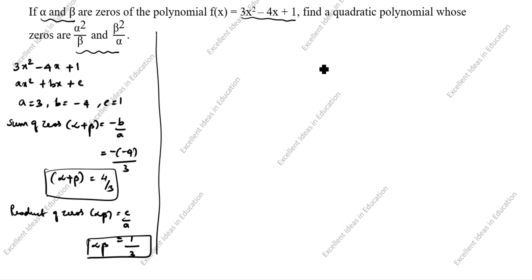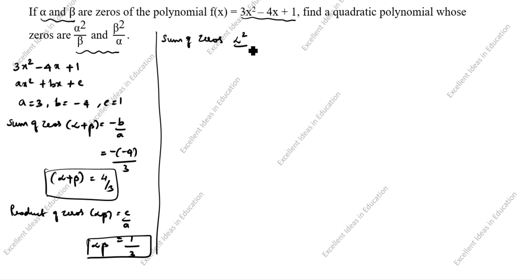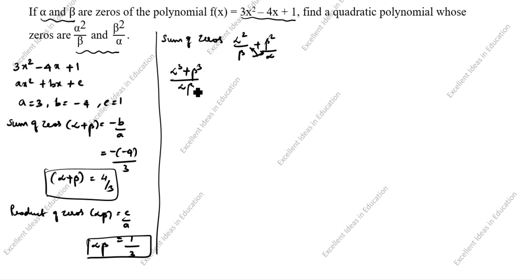Now we need to find the new quadratic polynomial whose zeros are alpha²/beta and beta²/alpha. We will find the sum of zeros of the new quadratic polynomial. Sum of zeros = alpha²/beta + beta²/alpha. Cross-multiplying gives: (alpha³ + beta³) / (alpha × beta).